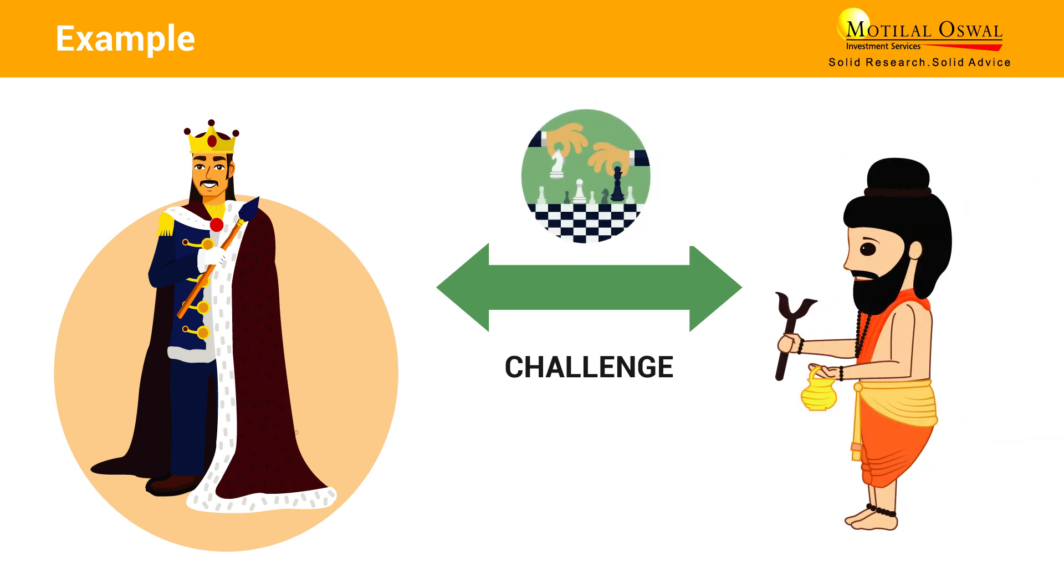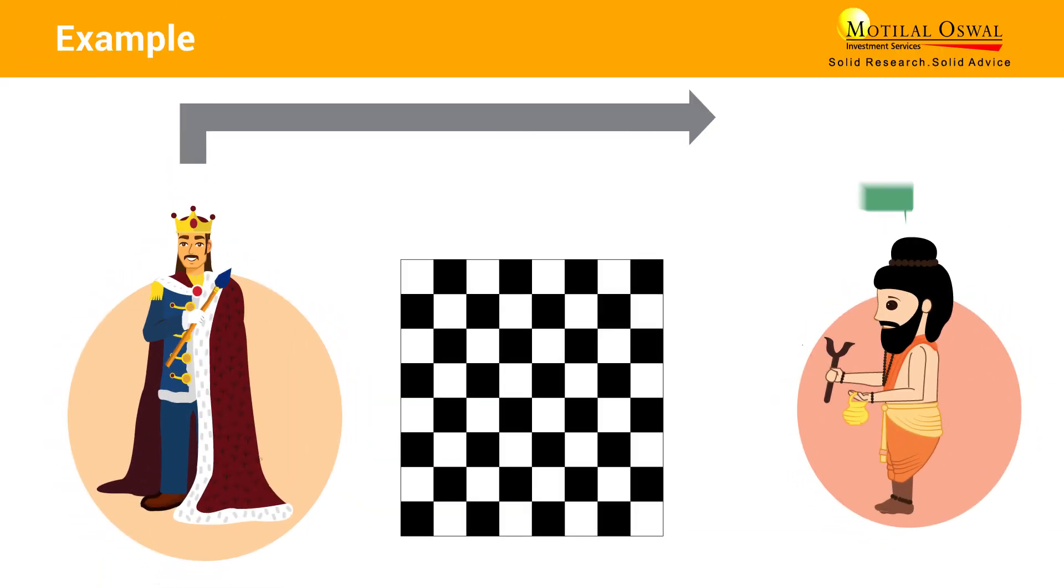One day a travelling sage was challenged by the king. To motivate his opponent, the king offered any reward that the sage could name. The sage modestly asked just for a few grains of rice in the following manner.